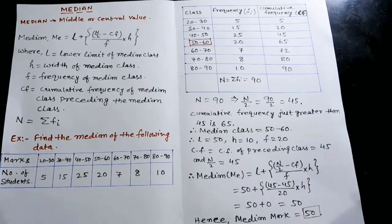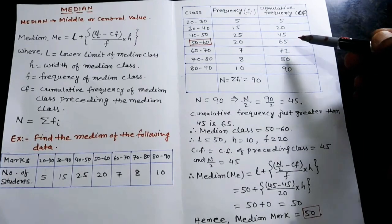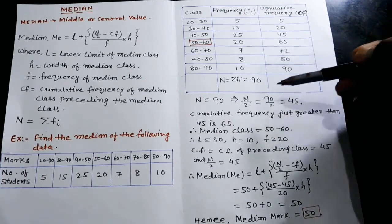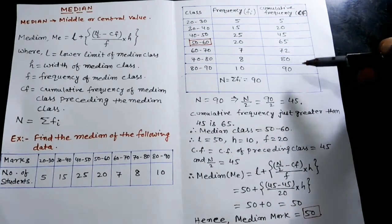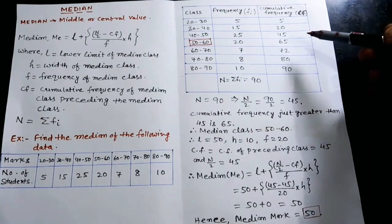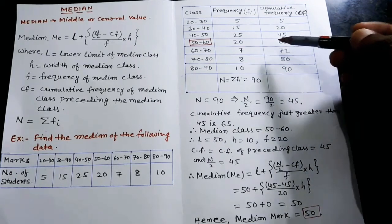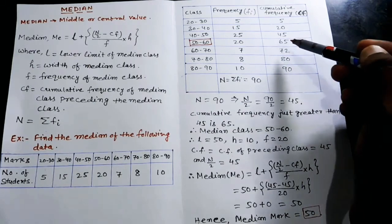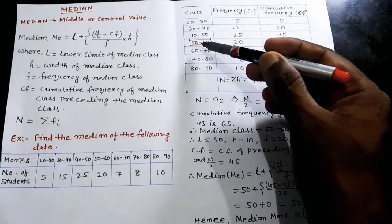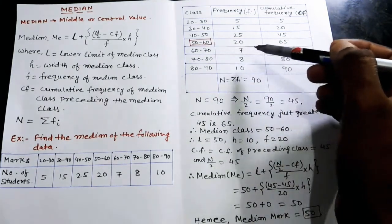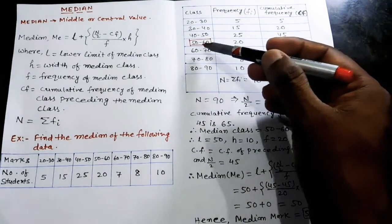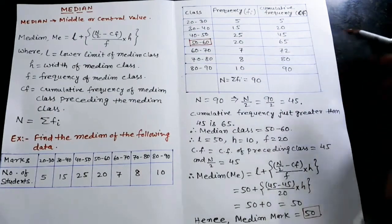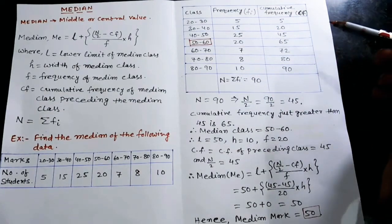The cumulative frequency just greater than 45 is 65. We select the CF value just greater than N/2, which is 65. Therefore the median class is 50–60.